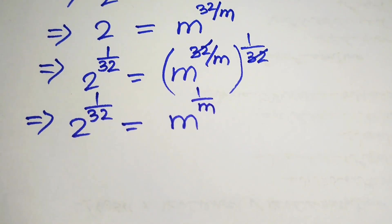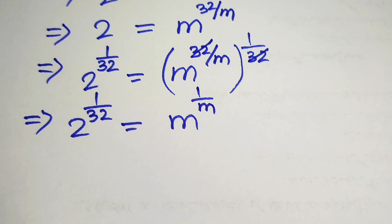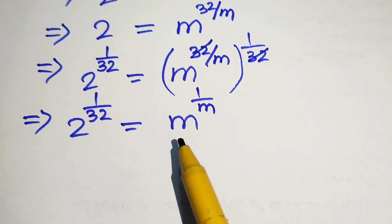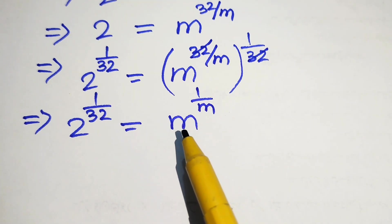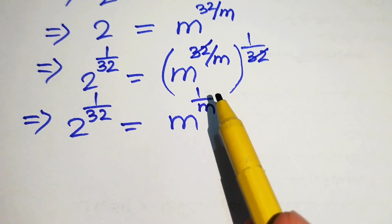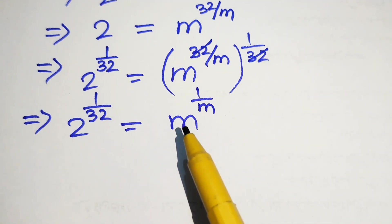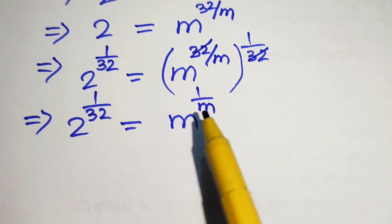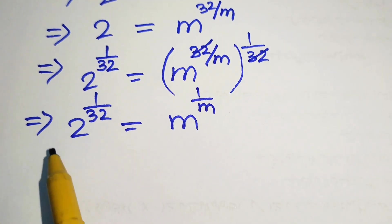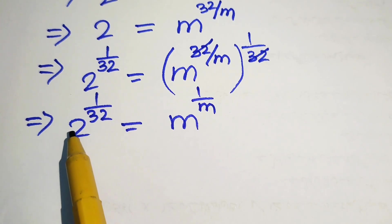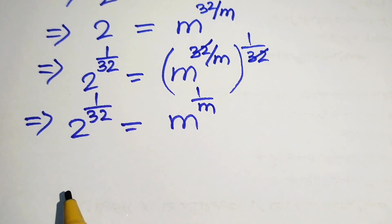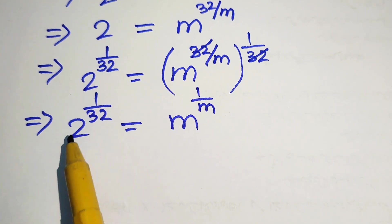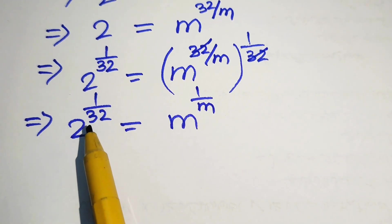On the right hand side, the base is m and its exponent is the reciprocal of its base. We want to make the same condition on the left hand side: if our base is 2, then its exponent must be 1 over 2. So we need to make the base and the reciprocal of the base its exponent.